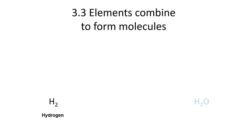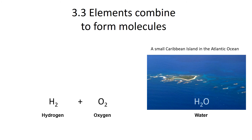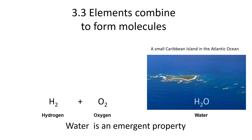We have something like hydrogen gas, which is H2, plus some oxygen, which is also a gas, and this comes together to form water. One of the important things about forming molecules is they have emergent properties. Liquid water is very different from either oxygen or hydrogen. As we combine elements together, molecules have different properties that are different from the individual elements that make them up.